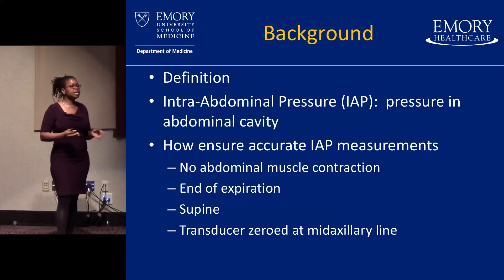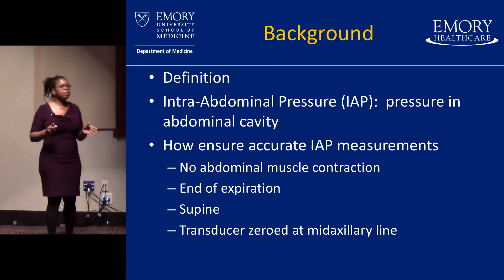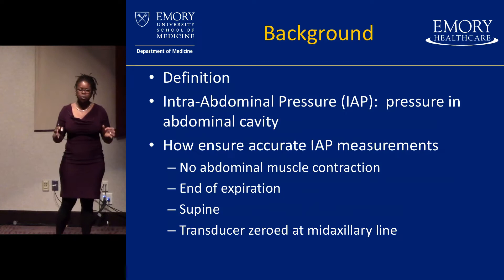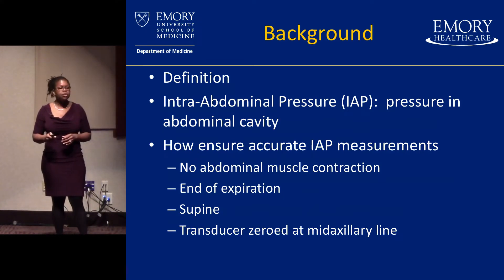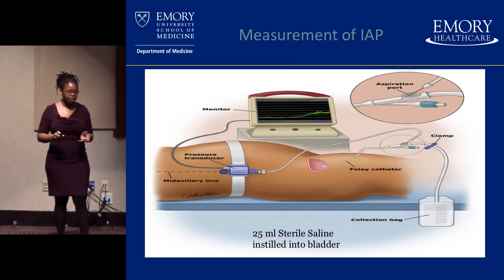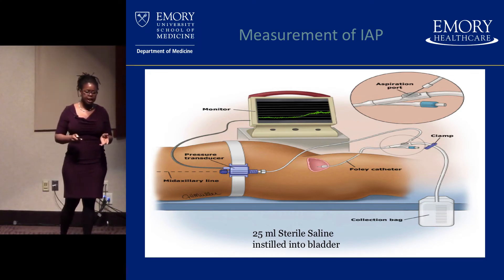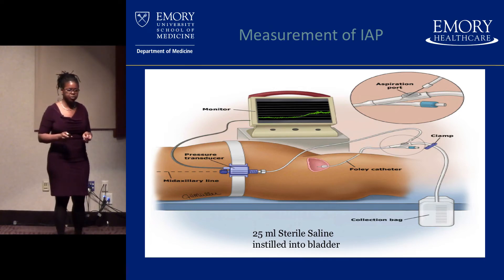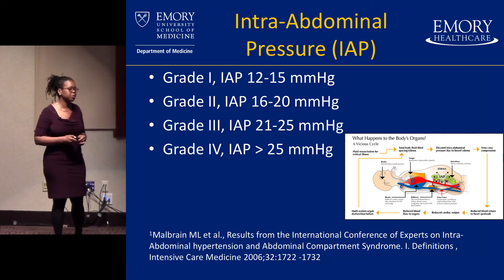So what is intra-abdominal pressure? It is the pressure within the abdominal cavity. To measure it accurately: ensure the patient has no abdominal muscle contractions — that means paralysis. Check at end-expiration with the patient supine and the transducer zeroed appropriately. This is measured with the Foley catheter — you instill 25 mL of sterile saline. Normal pressure should be somewhere between 5 to 10 mmHg. We also grade these to communicate severity.